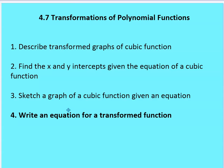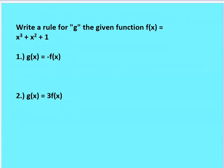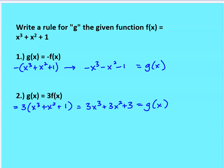Now we want to write an equation for a transformed function. Write a rule for g given f(x) = x cubed plus x squared plus 1, when g(x) equals negative f(x), and when g(x) equals 3 times f(x). Pause and try it on your own. For negative f(x), all the terms change sign — that's your g(x). For 3 times f(x), you multiply the entire function by 3 to get g(x).